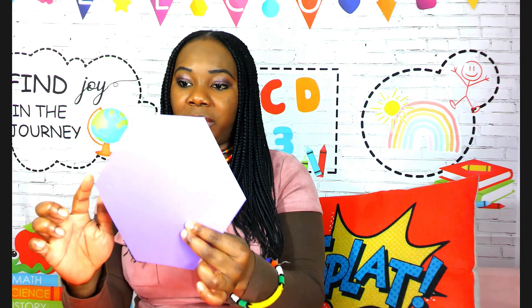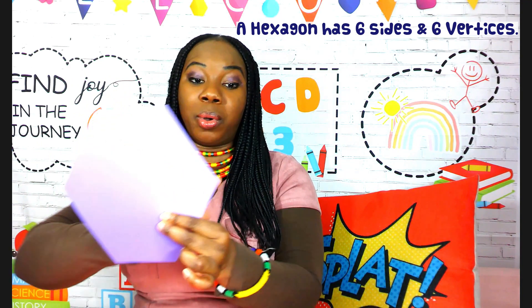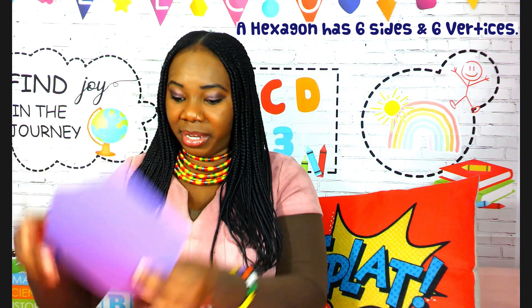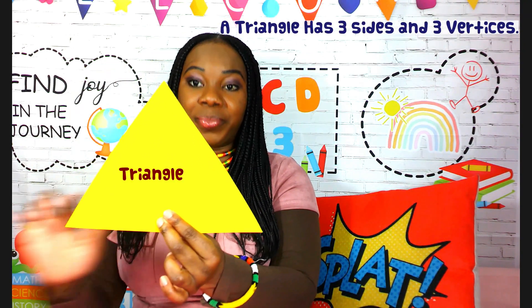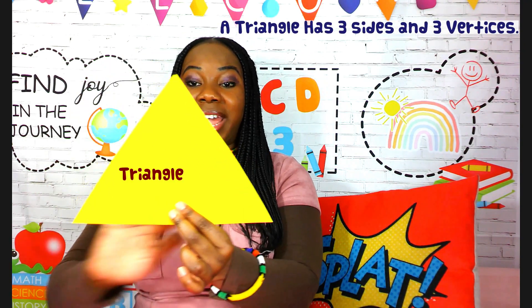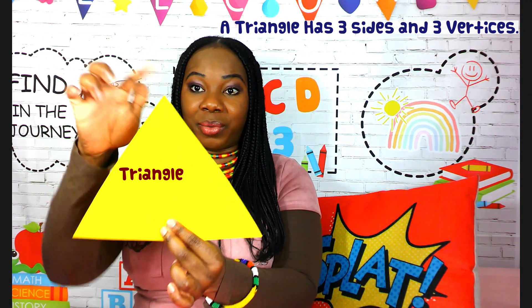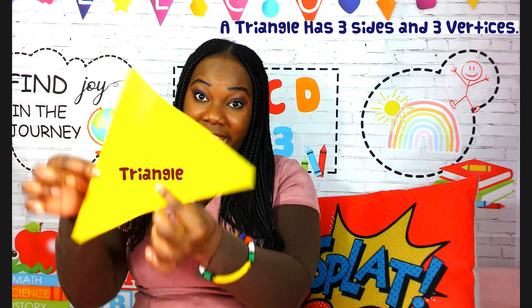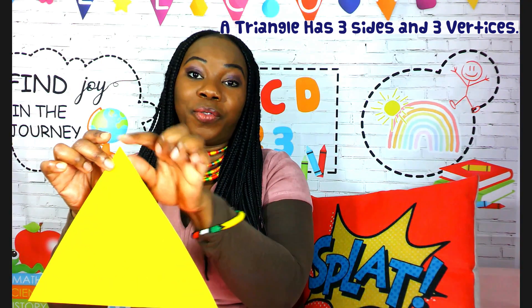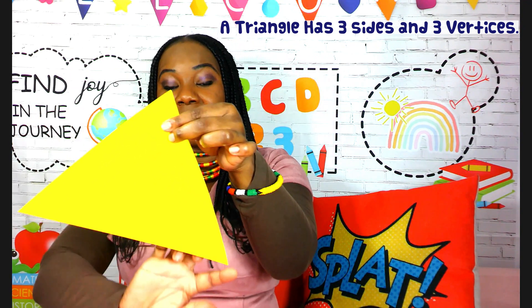With the use of a manipulative, the concepts of sides and vertices are made real. They can clearly see, for example, that a hexagon has six vertices — six points where the lines meet. An elementary learner can recognize a triangle and also recognize that our triangle has three sides and three vertices. With the manipulatives, they can manipulate the shape and see that the vertices are the points where the lines meet.